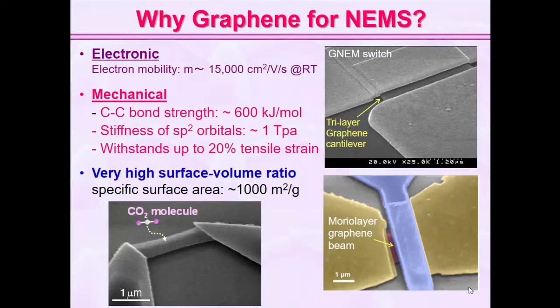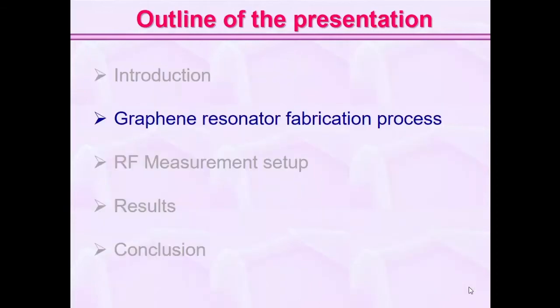Another important property of graphene is that it has high mobility, as well as high mechanical strength of one terapascal (Young's modulus), and it can withstand up to 20% tensile strain, and it has a high surface-to-volume ratio. These are the main advantages for graphene NEMS. We are also working on structures of cantilever and doubly-clamped beams, which are very stable.